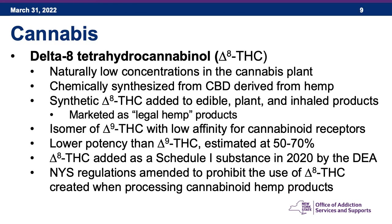Delta-8 THC is naturally low in concentration in the cannabis plant, and it comes mostly from the chemical synthesis of CBD derived from hemp. Synthetic delta-8 THC has been added to edible and inhaled products and marketed as 'legal hemp products.' It is an isomer of delta-9 THC with a lower affinity for cannabinoid receptors, estimated at about 50–70% the potency of delta-9 THC. Delta-8 THC was added as a Schedule I substance in 2020 by the DEA.